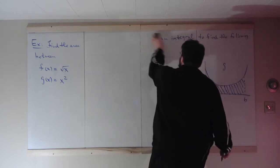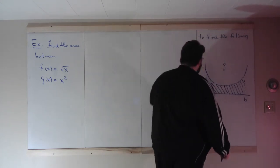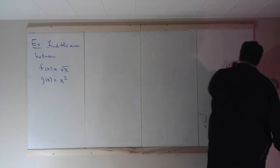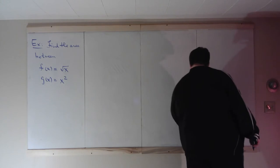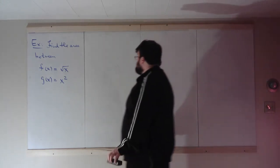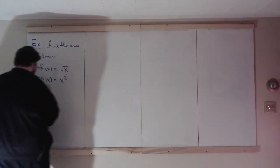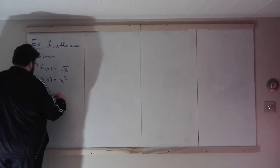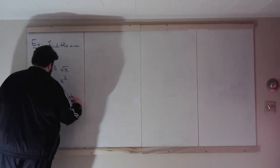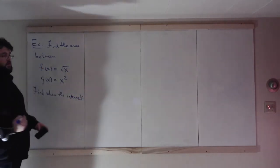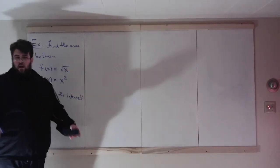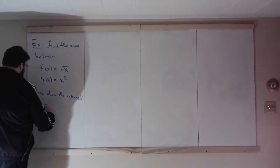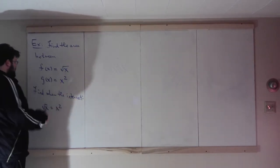But the most important thing to find first is where they intersect. Let's find where they intersect. Set them equal. Find where they intersect. Remember, the bounds of our integral are X values, so all we need are the X values where they intersect. Root X equals X squared.